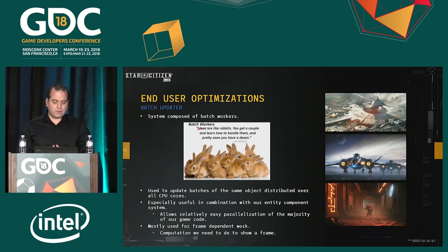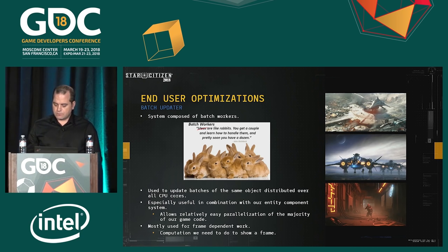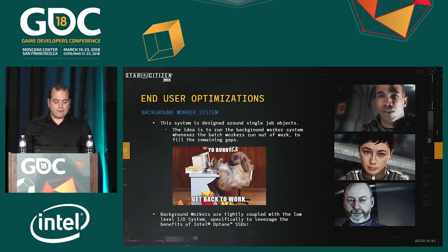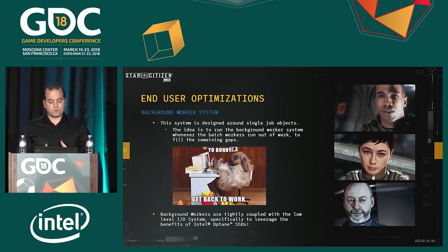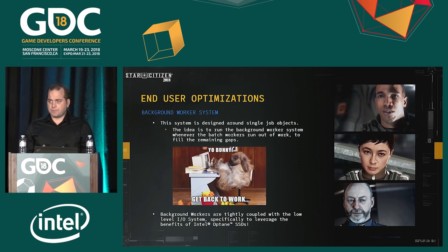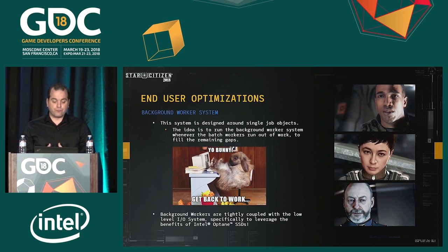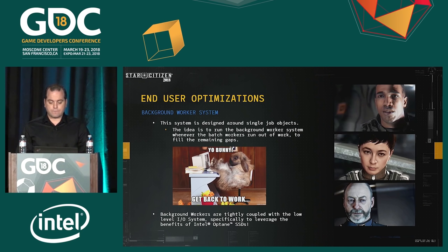The batch updater is used for frame-dependent work — anything needing computation to show a frame. On the other side, we have our background worker system, designed around single job objects, intended to run whenever the batch workers run out of work. This is where we begin to leverage Intel Optane technology. The background workers are tightly coupled with our low-level I/O system and give us benefits that are not only user-facing, but also for the game developers themselves.